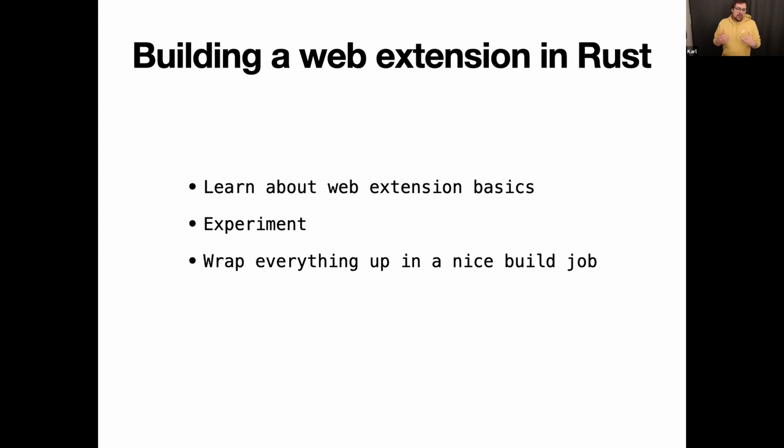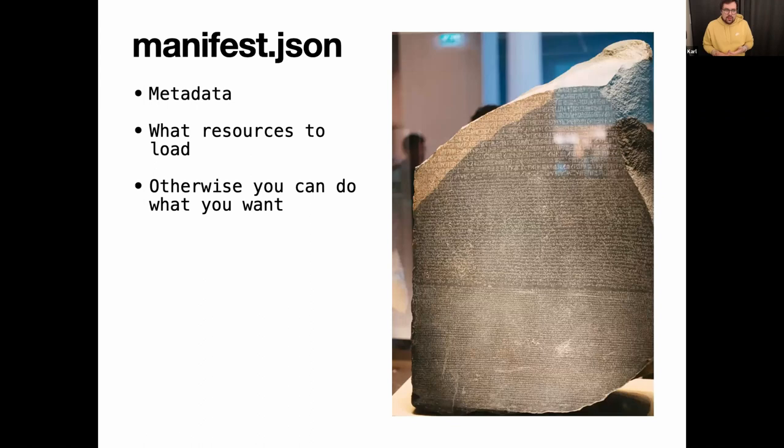At the heart of a web extension, there's a manifest.json. That's basically a bunch of metadata about what resources you want to load, and the rest of the structure of the web extension is really up to you — so that's good because we have a lot of flexibility when we want to automate stuff.